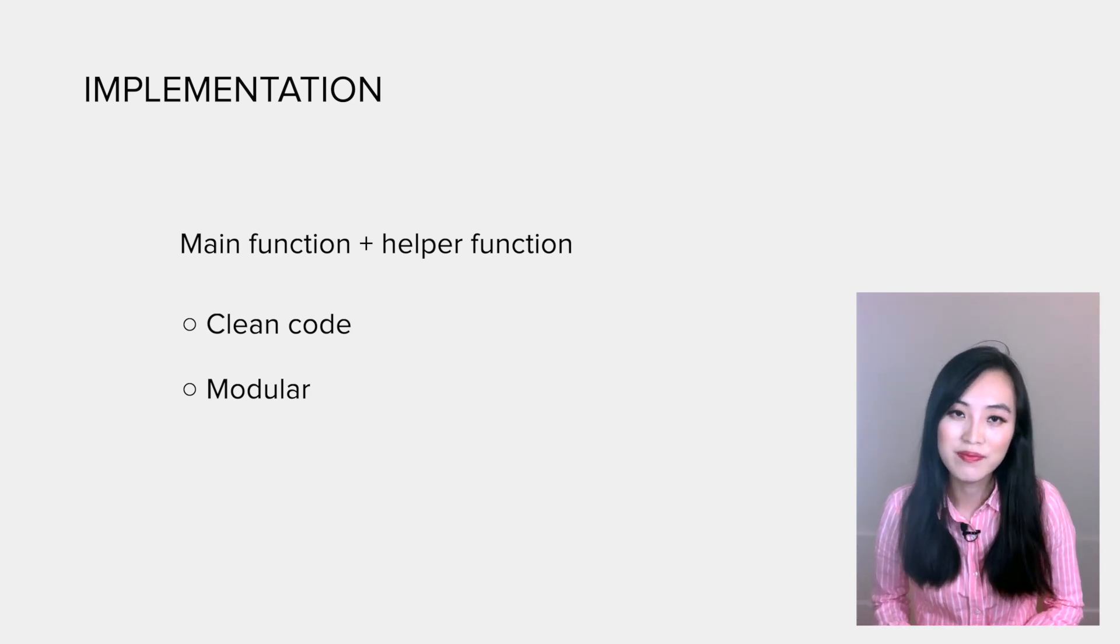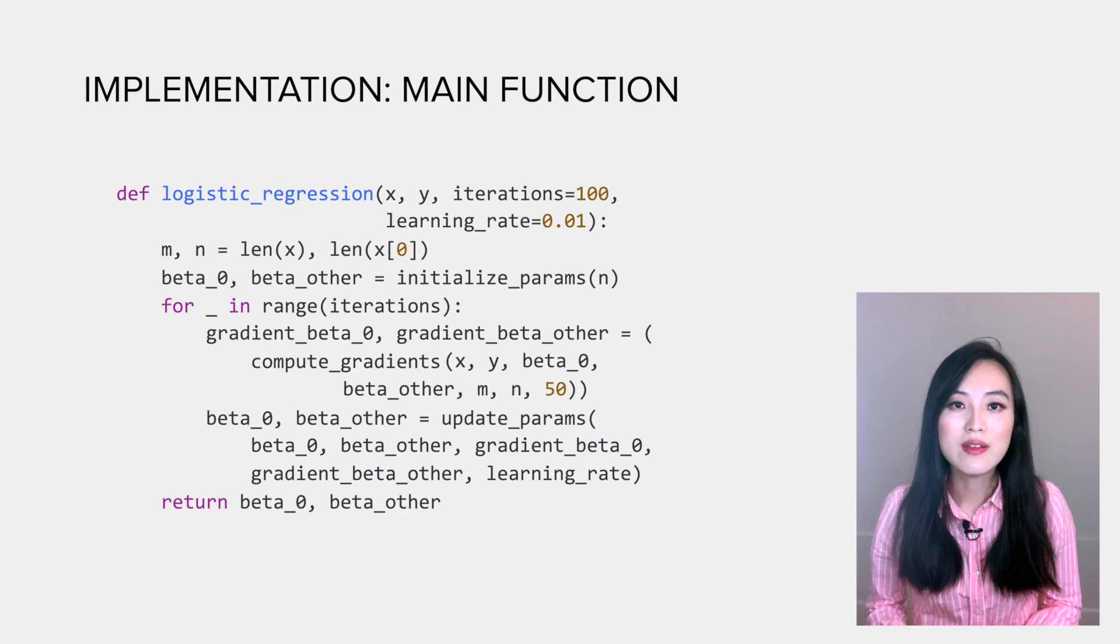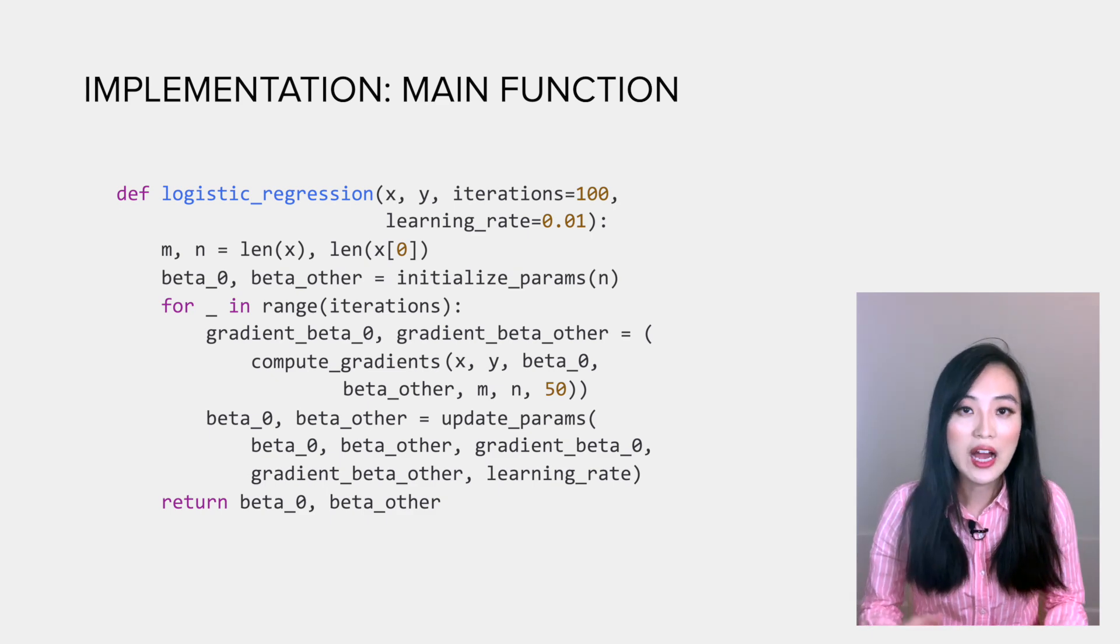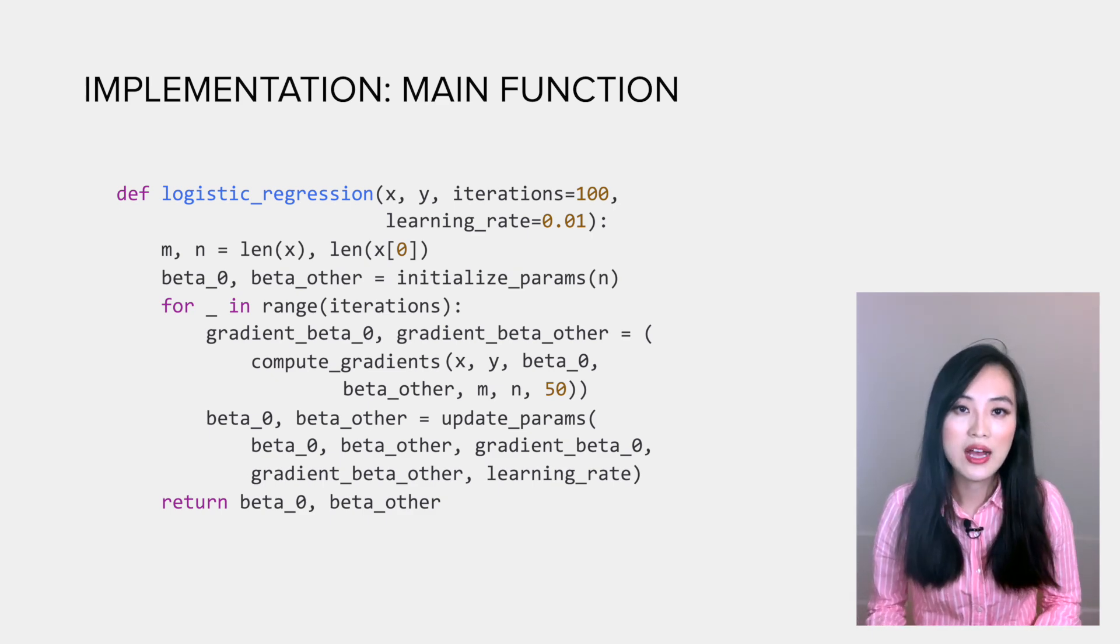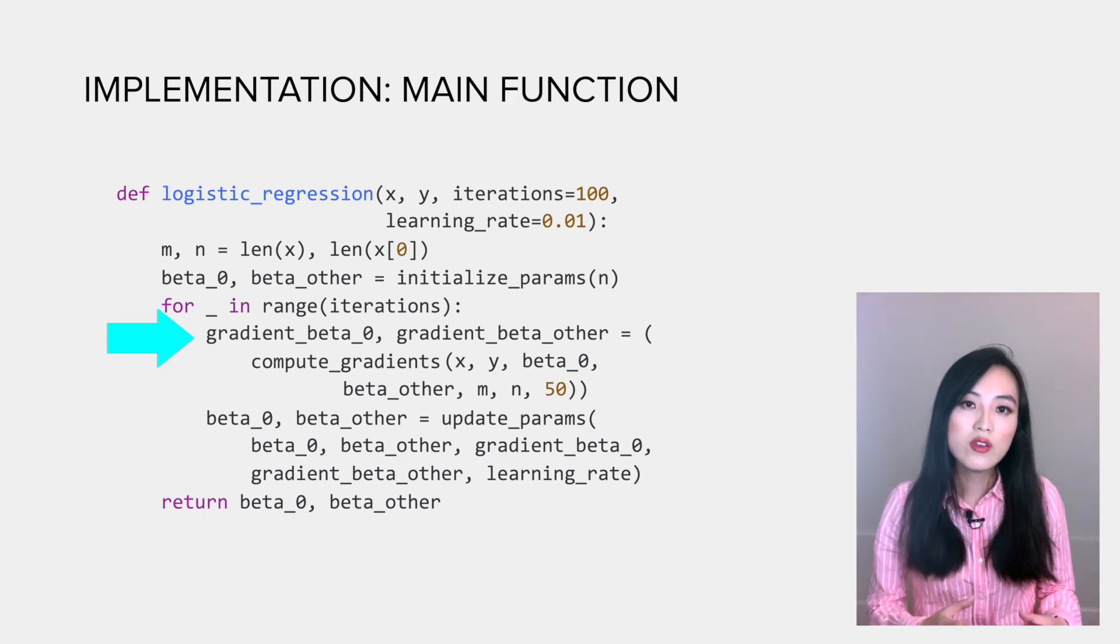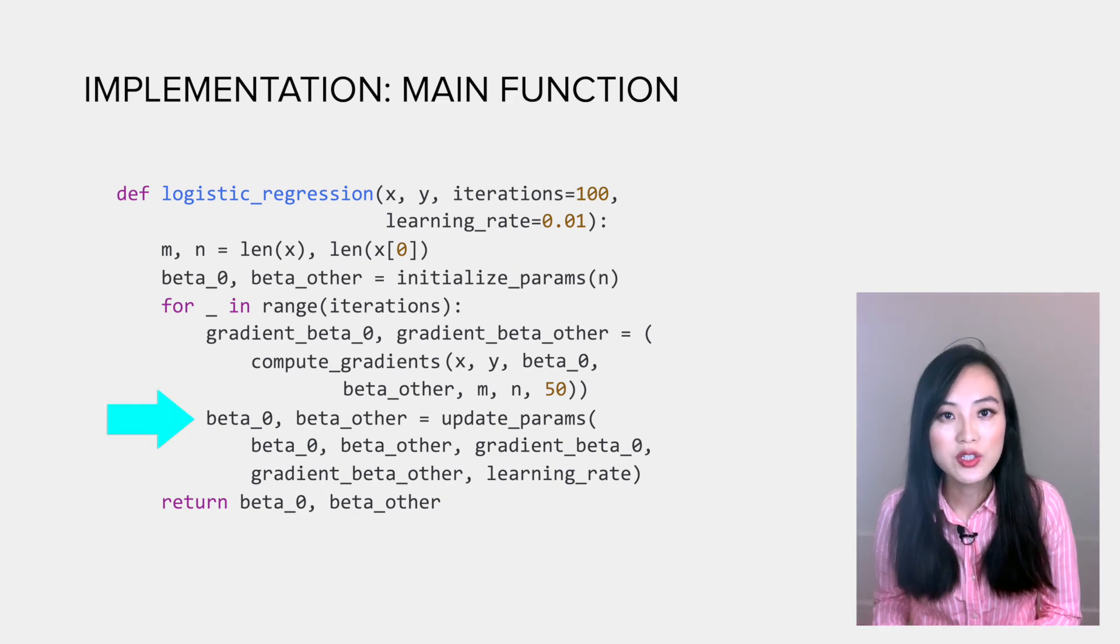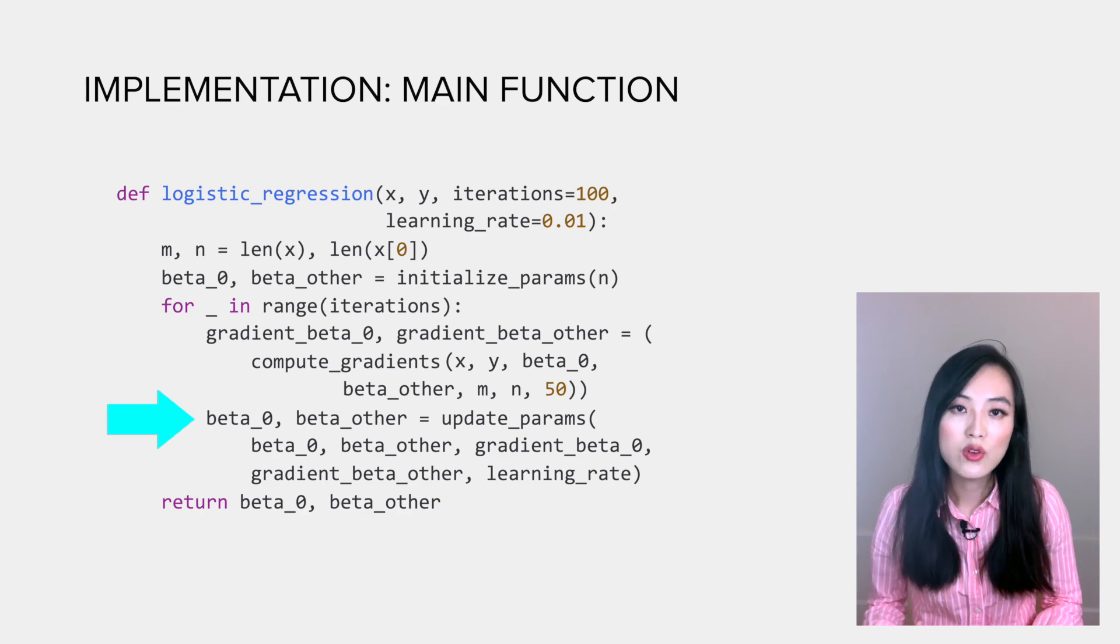Now let's start with the main function. First, we initialize the parameters. We differentiate beta 0 and other betas because beta 0 has a different form of gradient than other betas. We then use a helper function to derive the gradients at each beta. Lastly, we use another helper function to update beta values using the gradients.